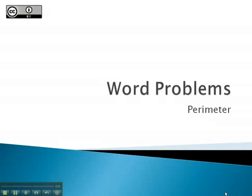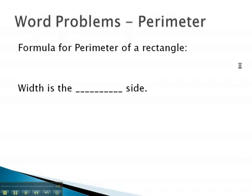In this video, we're going to take a look at another type of word problem dealing with perimeter. We will remember that the formula for perimeter is 2 times the length, plus 2 times the width.